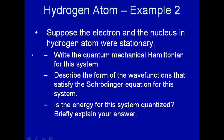Now let's write down the quantum mechanical Hamiltonian for this system. So we'll start with the classical Hamiltonian. H is equal to the kinetic energy plus the potential energy V.